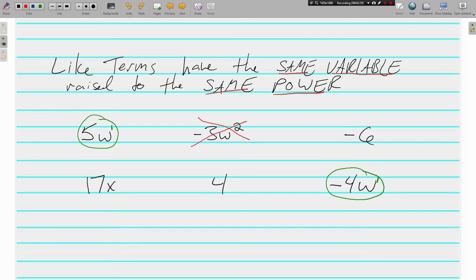17x, there's nothing here that we can combine because nothing else has an x. And right here are negative 6 and our 4. These are like terms. I know they don't have variables, but both of them not having a variable makes them the same. They have the same variable. They both don't have one. And obviously it's not to a power. But we can combine a 4 and a negative 6. We know how to do that. So same variable raised to the same power.